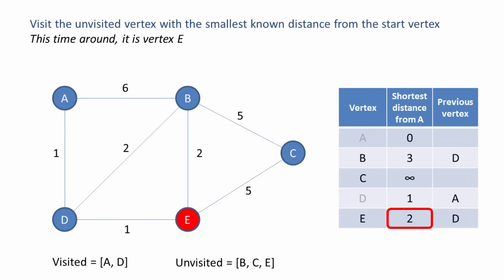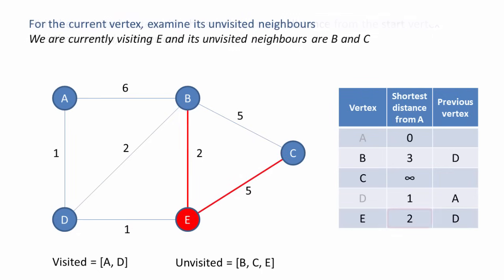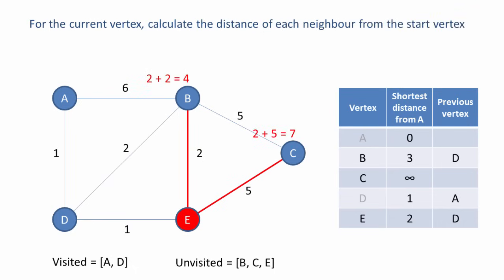Once again, we visit the unvisited vertex with the smallest known distance from the start vertex — this time it's vertex E. For the current vertex, we examine its unvisited neighbours. We're currently visiting E, and its unvisited neighbours are B and C. For the current vertex, we calculate the distance of each neighbour from the start vertex. Using the information in the table, the total distance to B is 2 plus 2, giving us 4. The total distance to C from A is 2 plus 5, giving us a total of 7.